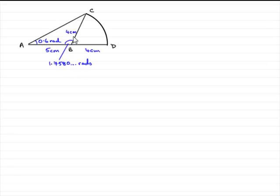So, knowing that this is basically 180 degrees or in radians terms, pi radians, we can find out this angle in here by doing pi take away 1.7580. So, let's just start with that. So, we have that angle CBD is equal to pi radians minus 1.7580 and so on.